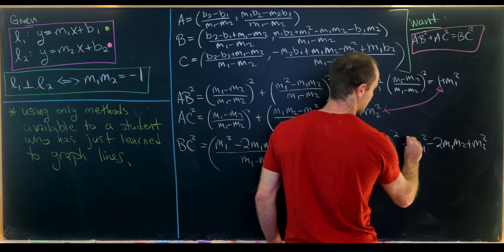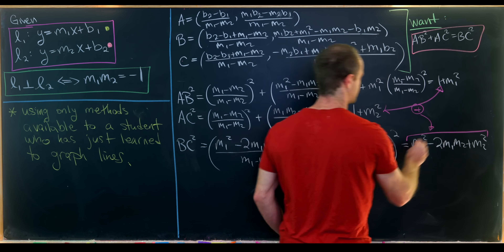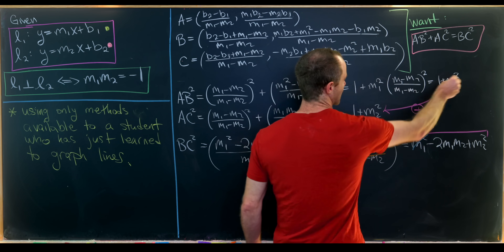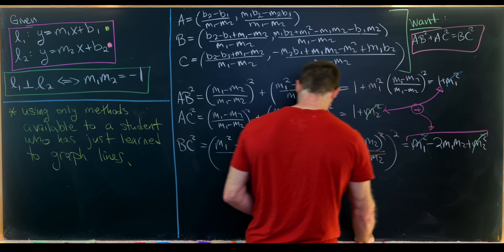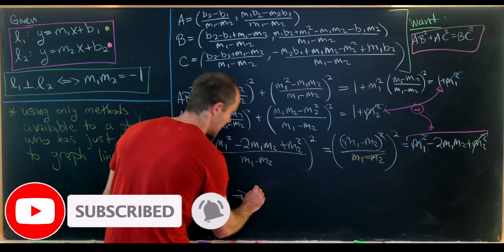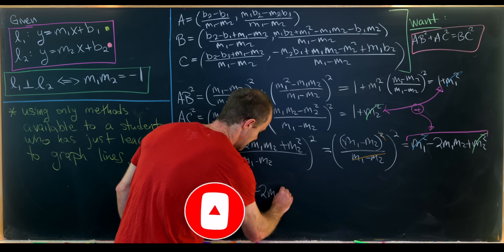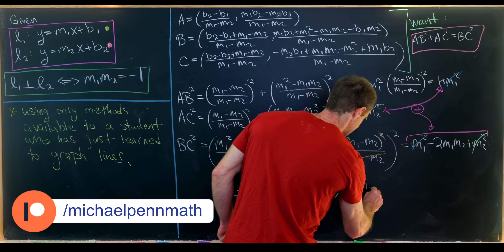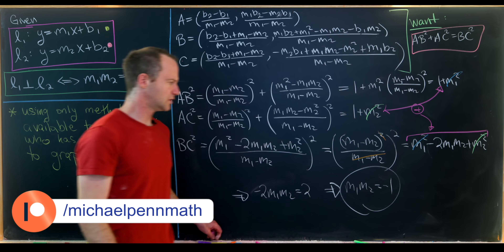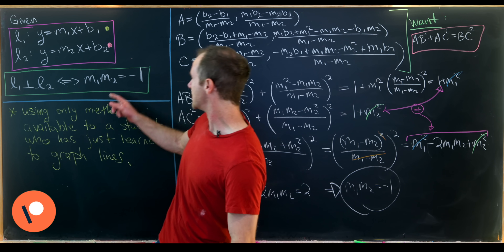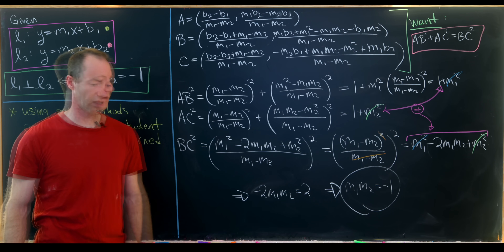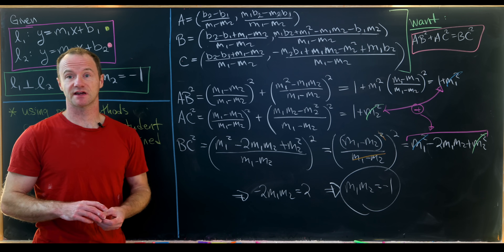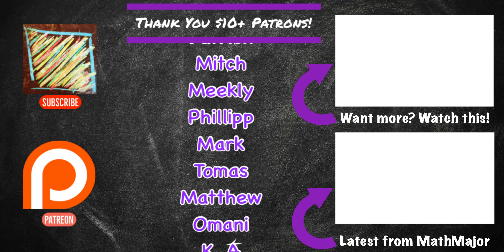We want AB² plus AC² to equal BC². We have (1 plus m1²) plus (1 plus m2²) equals m1² minus 2·m1·m2 plus m2². The m1² terms cancel, the m2² terms cancel, and we're left with the simple equation negative 2·m1·m2 equals negative 2, so m1 times m2 equals negative 1 — which is exactly where we wanted to end up. Since all steps were reversible and the Pythagorean theorem is itself an if-and-only-if statement, the proof is complete. And that's a good place to stop.